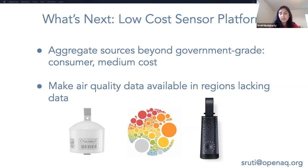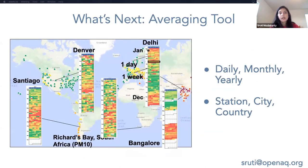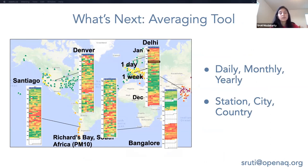More immediately, we will also be launching an averaging tool that will make it much easier to calculate averages. The current methods can take weeks. Using the platform, you'll be able to find the country average for every country in a matter of seconds. This will be available through the API, and you'll be able to specify temporal and spatial resolutions. We'll be launching this in the coming weeks.